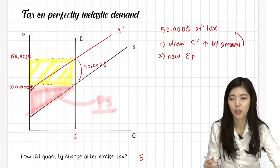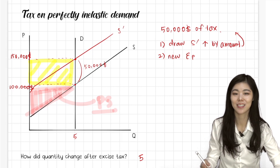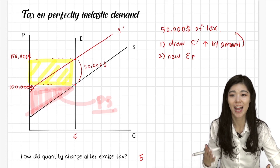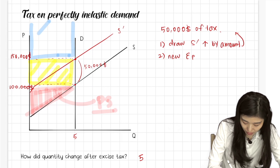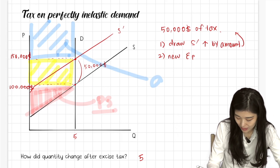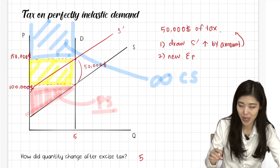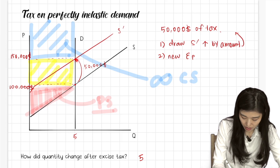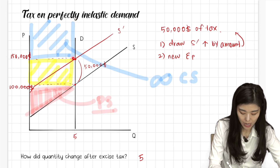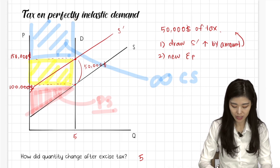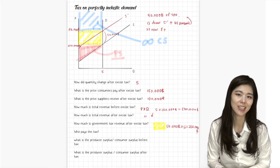What about consumer surplus? Consumers will have an infinite amount of consumer surplus because they're willing to pay any price anyway. So consumer surplus would start just here and then it would go on forever — it's still unlimited. However, remember before tax it started from here, but now after tax the consumer surplus will start from $150,000. So remember this — now we know what it is like to levy tax on perfectly inelastic demand.